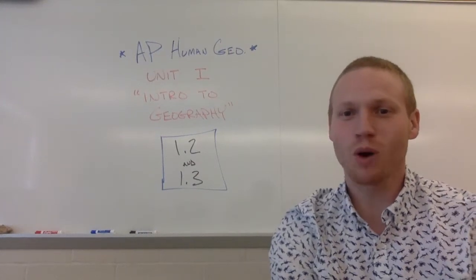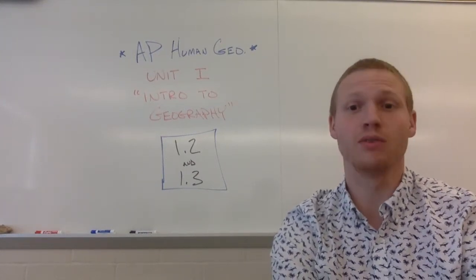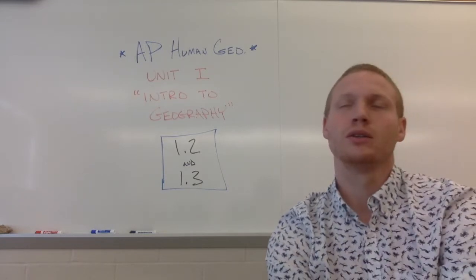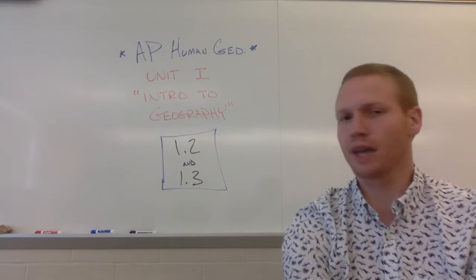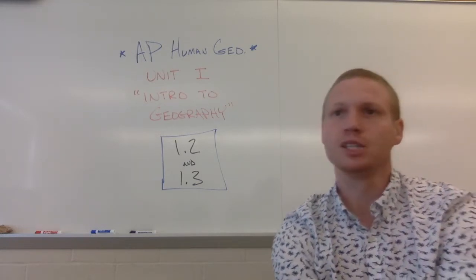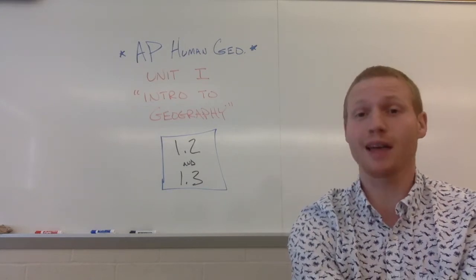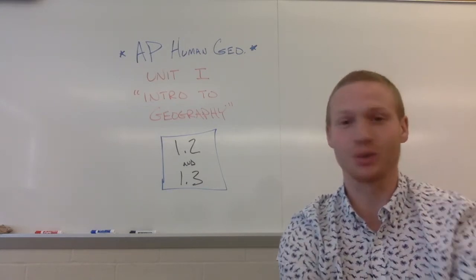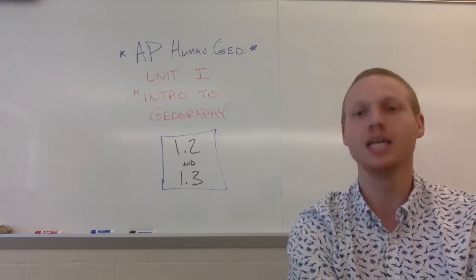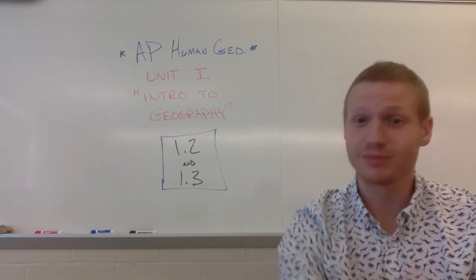Hello everyone, Mr. Lewis here again to walk you through sections two and three of unit one, which is your introduction to geography. Sections two and three get into things like GPS, global positioning systems, geographic information systems — basically the ways that we get all of our information on Google Maps or Apple Maps or Google Earth. This is how the geographers do it, so let's dive into it.